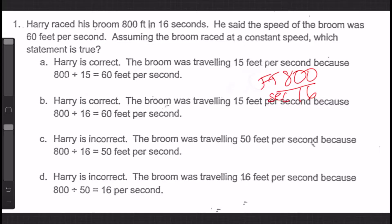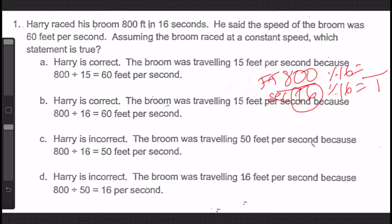Since we want to know how many feet per second — per one second — we need to make the bottom number a one. That 16 needs to become a one. We do that by dividing both the top and the bottom by 16. So 16 divided by 16 is 1, and 800 divided by 16 is 50. So from this calculation we can see that Harry on his broom is traveling at 50 feet per second.